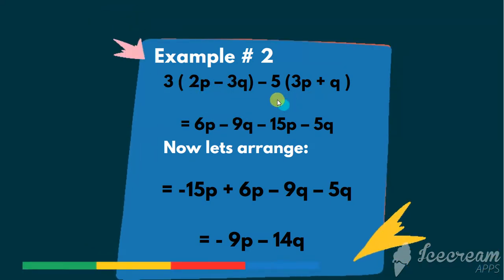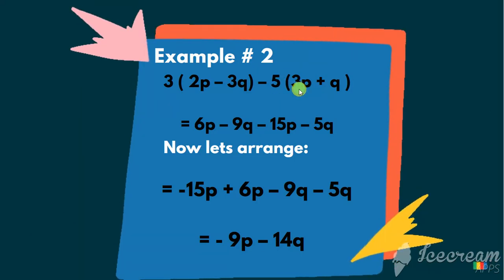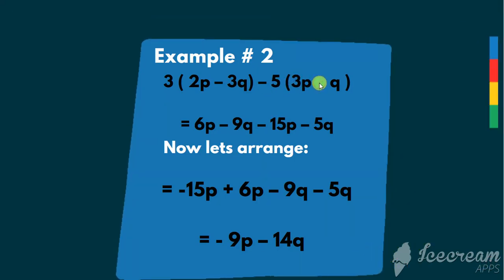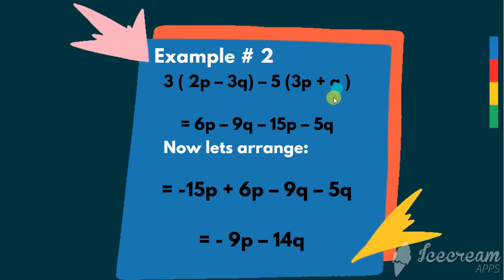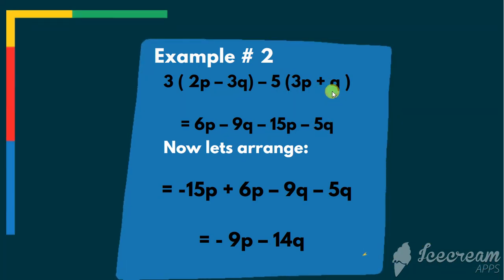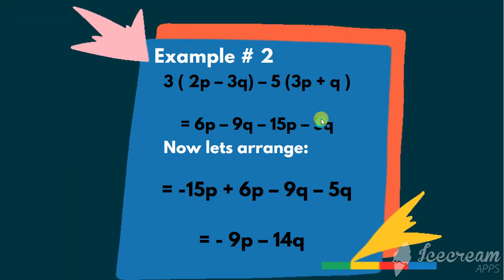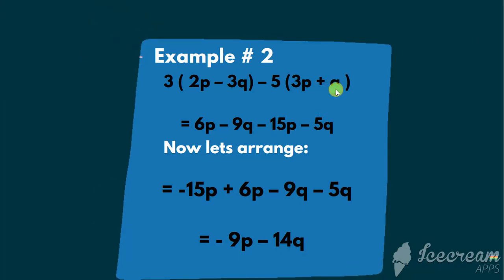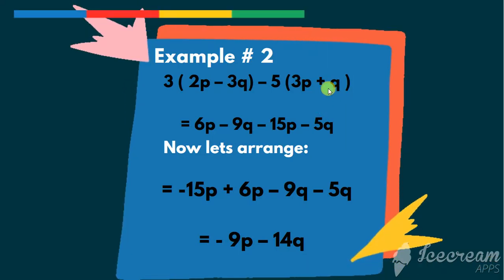Here, 5 multiply by 3 will be 15. Minus plus will be minus. And 5 multiply by 1 will be 5y. Now, we are multiplying it by 1 because I told you that variables without coefficients have the number 1.